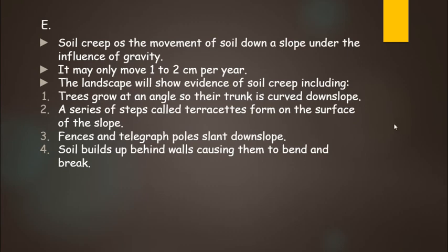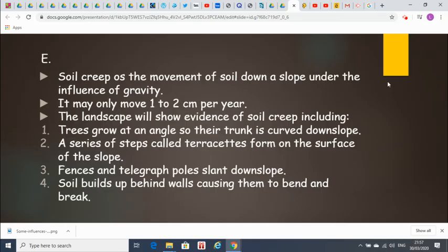Soil creep is the movement of soil down a slope under the influence of gravity. It may only move one to two centimetres per year. The landscape will show evidence of soil creep. These are your four pieces of evidence — trees grow at an angle so their trunk curves down the slope — and all of these are shown in your diagram.